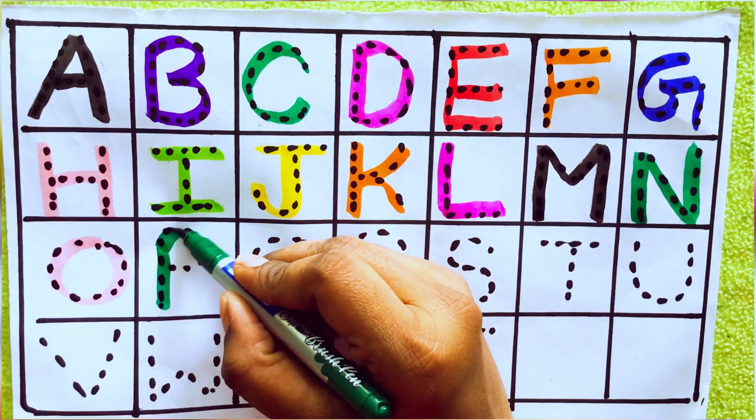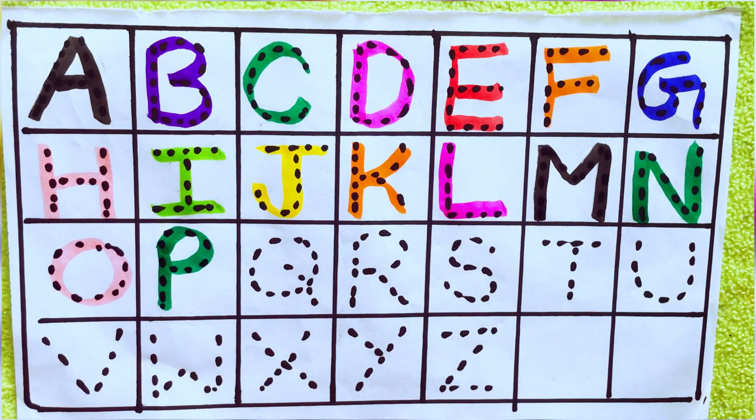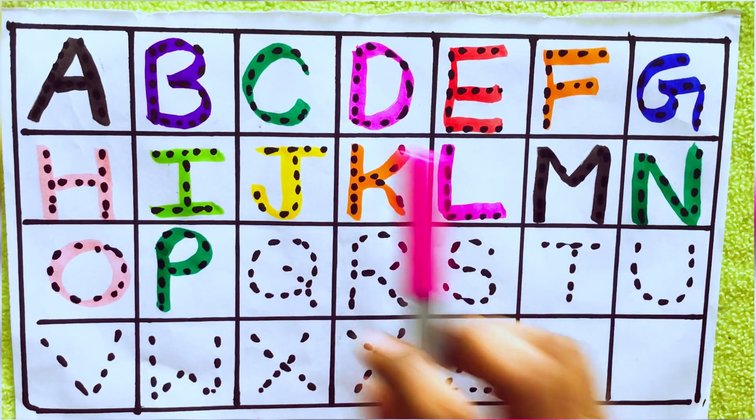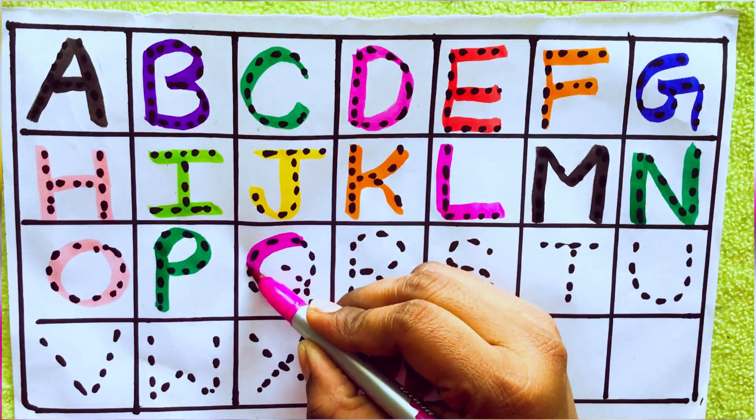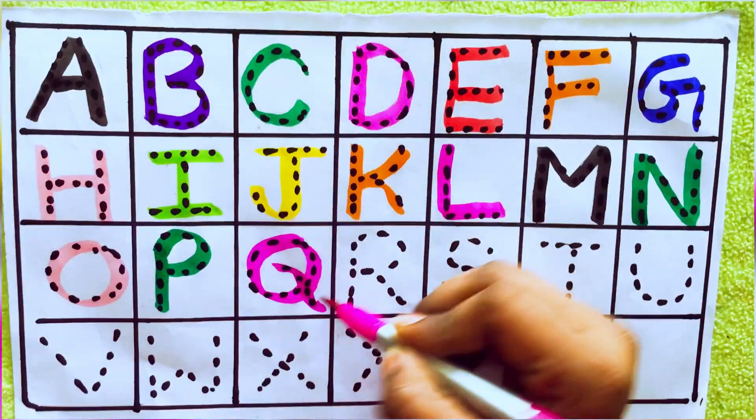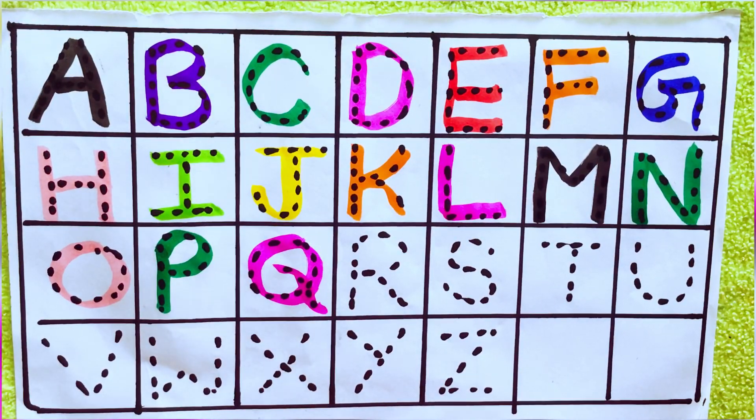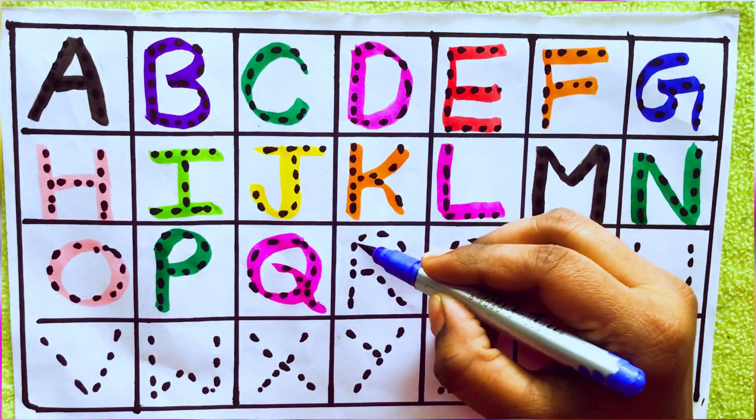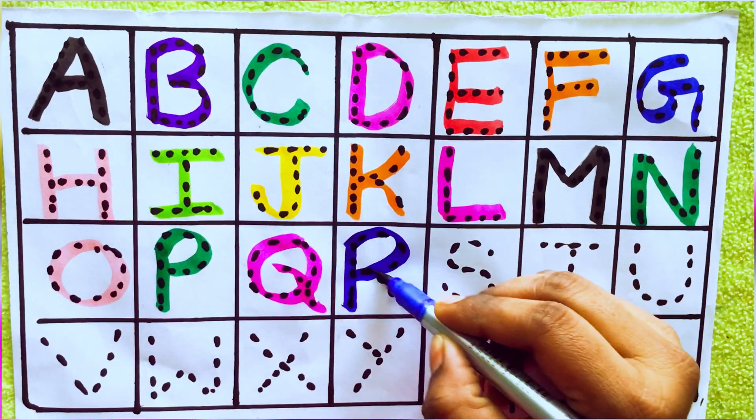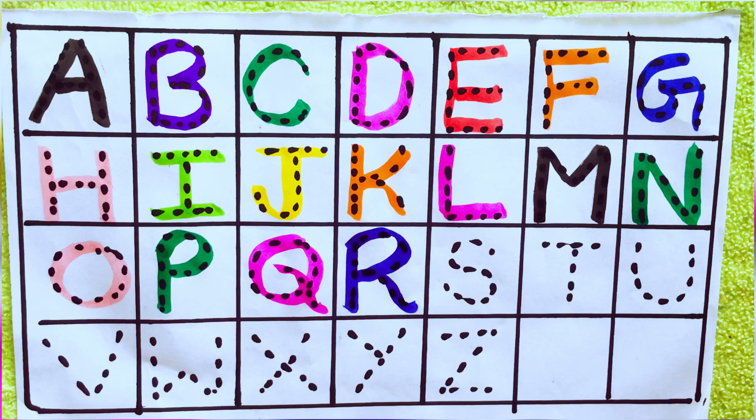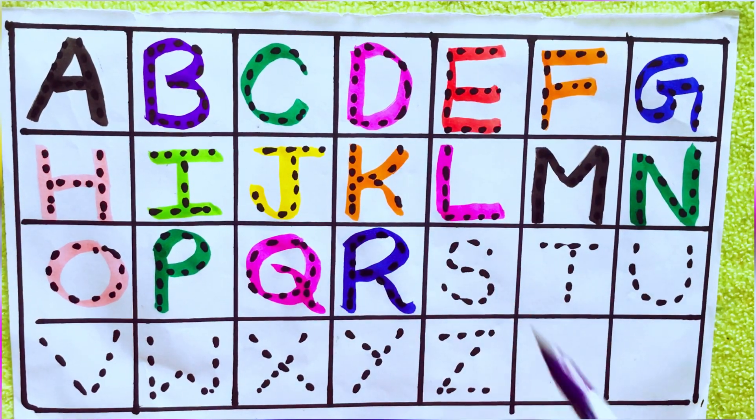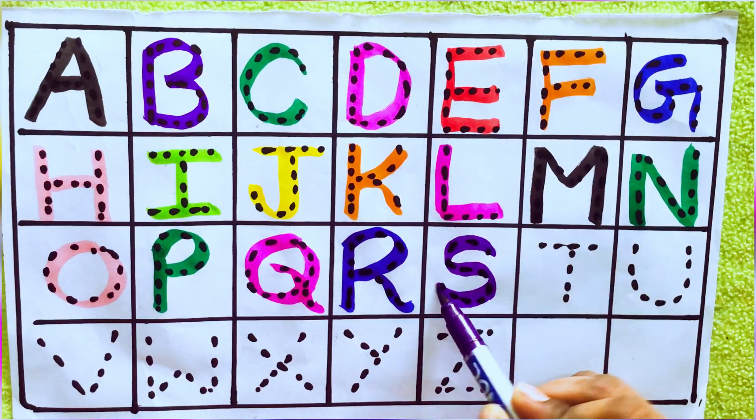Green color P, P for Parrot. Pink color Q, Q for Queen. Blue color R, R for Rose. Violet color S, S for Sunflower.